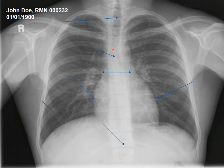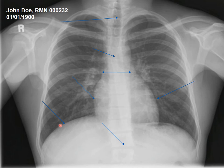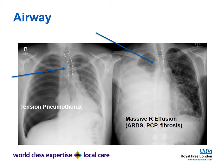Looking at the anatomy: at the top you have the trachea; here is the carina where the bronchus splits into the left and right main bronchus; here you have the mediastinum, the right heart border, the diaphragm, and the thoracic to lumbar vertebrae.